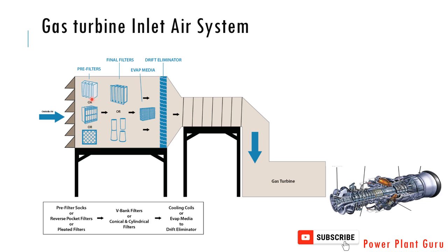Now there is a pre-filter. Pre-filter means there is a layer of fabric or synthetic material which will absorb the remaining water, moisture, or fog which has come inside that inlet air system. If this system is able to retain some of the moisture, then comes the final inlet air filters.